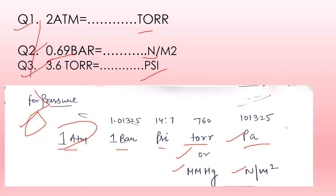Remember the series — first 1 atm, then 1 bar, psi, torr, and pascal — along with their corresponding values: bar = 1.01325, psi = 14.7, torr = 760, and pascal = 101325.